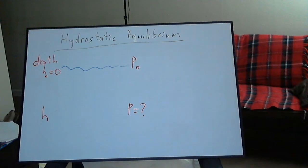We want to know the pressure at some depth h. Because we expect pressure to increase with depth, we are going to set up a reference coordinate system with positive h downwards.